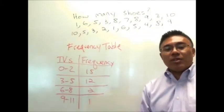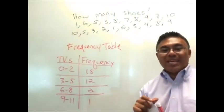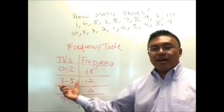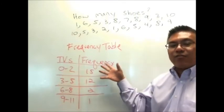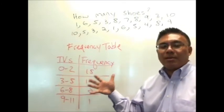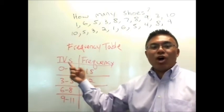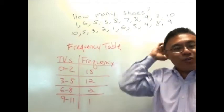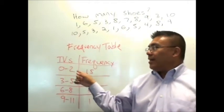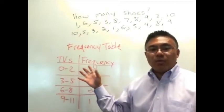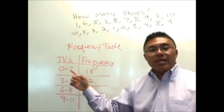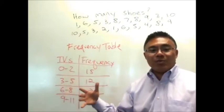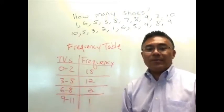So the way a frequency table works is you're going to create different bins or classes of the data you collected and you're going to tell us the frequency, the number of times somebody said a number that belongs in that particular bin or class. So for instance, here we did a survey and we'll look at the example table first before we turn our data into a table. Here we did a survey and asked people how many TVs they owned.